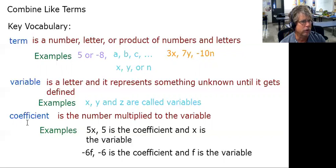For right now though, another word that's important to us is the word coefficient. The coefficient is the number multiplied to the variable. So like if I have 5X, the 5 is actually called the coefficient and X is the variable. So the number multiplied to the variable is actually called the coefficient.